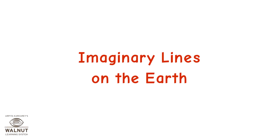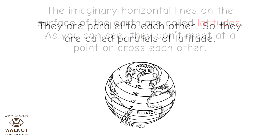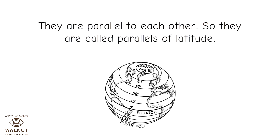Imaginary Lines on the Earth. The imaginary horizontal lines on the surface of the earth are called latitudes. As you can see, they don't meet at a point or cross each other. They are parallel to each other, so they are called Parallels of Latitude.